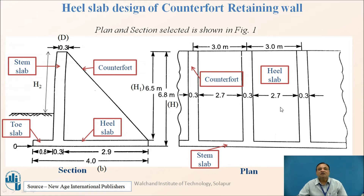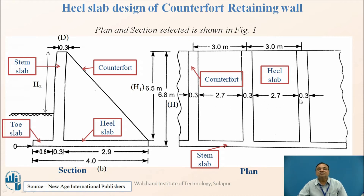The difference between bending moments: for a cantilever retaining wall it is WL²/2, whereas here for the continuous slab it is WL²/12. That is the advantage of going for counterforts — the bending moment is significantly reduced because of continuity.